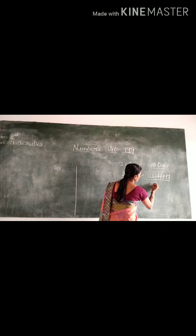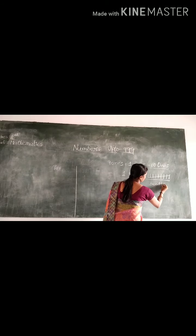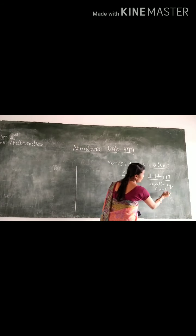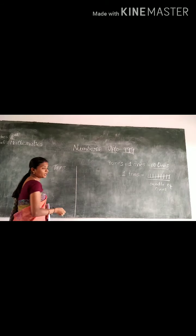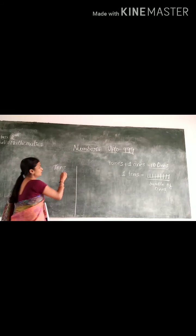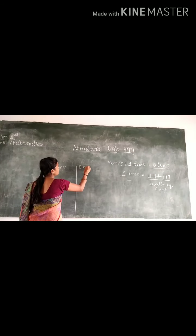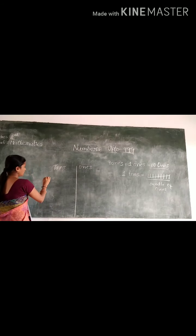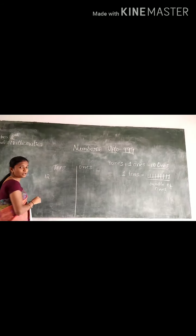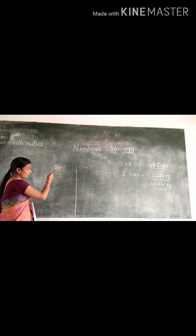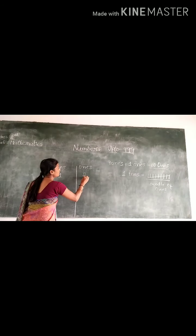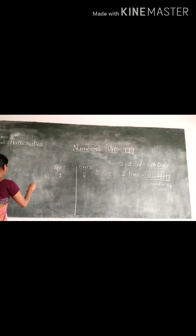This is called as 1 group of 10. For example, if I do 12, you already know the place value columns, right? This is the 10s place and this is the 1s place. If I do 12, how will you write? You write 1 in the 10s column and 2 in the 1s column.